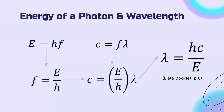Other times, we might want to relate the energy of a photon to its wavelength. So if we combine the equation E equals hf with the equation for the speed of a photon, we can get the equation lambda, or wavelength, equals hc over E. That's Planck's constant times the speed of light in a vacuum divided by E, the energy of the photon.